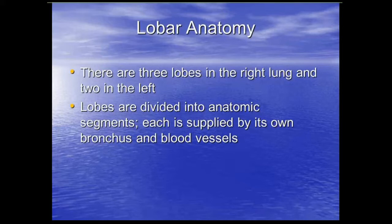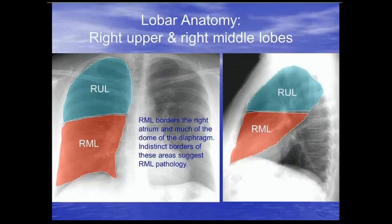Moving on to lobar anatomy. There are three lobes in the right lung and two in the left. Lobes are divided into anatomic segments, each supplied by its own bronchus or blood vessels. I'm not going to go into segmental anatomy — that's more for radiology residents — but I will cover lobar anatomy.